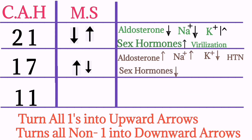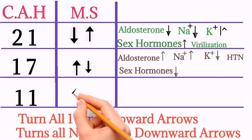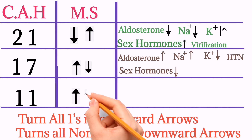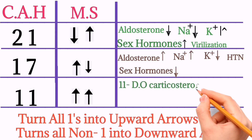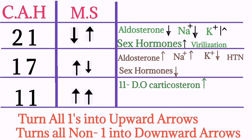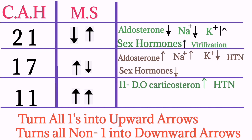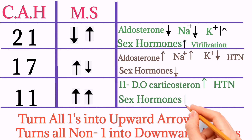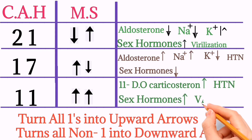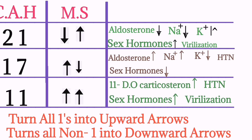In 11-beta hydroxylase deficiency: the mineralocorticoid 11-deoxycorticosterone will increase, while the other mineralocorticoid — aldosterone — will decrease, which leads to hypertension. Sex hormones are increased, leading to virilization.